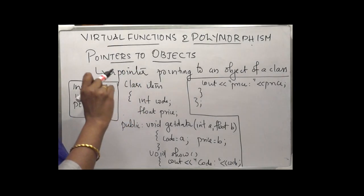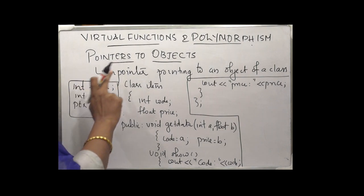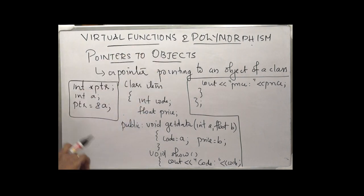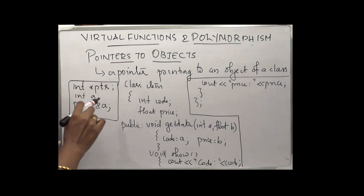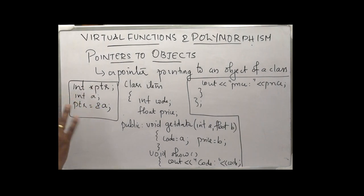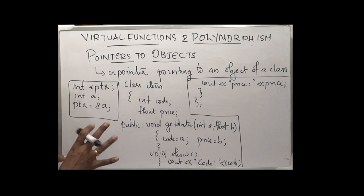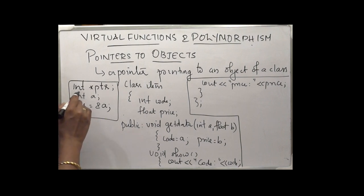In order to learn the concept of runtime polymorphism, we should have a thorough knowledge about pointers to objects. Do you remember what is a pointer? A pointer is a variable that points to another variable. That means a pointer can contain the address of another variable.